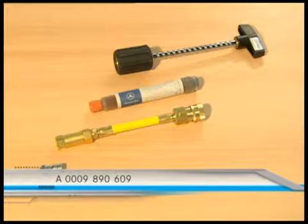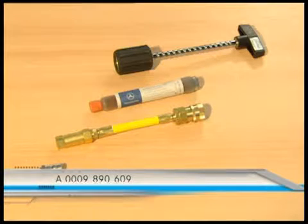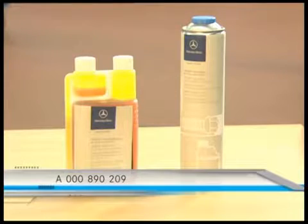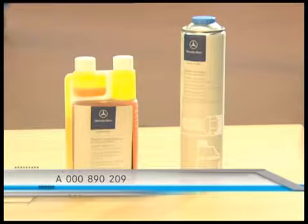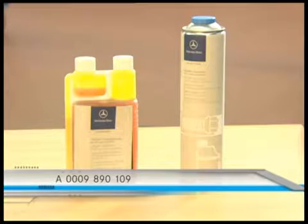This additive is called Tracer and is made of fluorescent coloring liquid. It's available with the number 0009 890 609. The contrast agent is also available in a refill bottle, good for 50 applications, with the number A000890209. A large bottle on the right of the picture has 71 applications, with the part number A0009 890109.